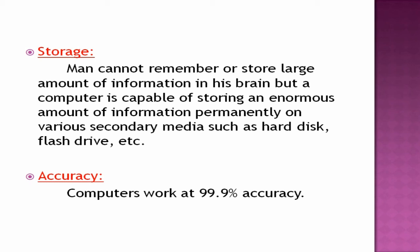Next characteristic: accuracy. Computers work at 99.9% accuracy — not 100%, because you have to initiate your work, and if any mistake is in your initiation, then the computer is not responsible for its accuracy.